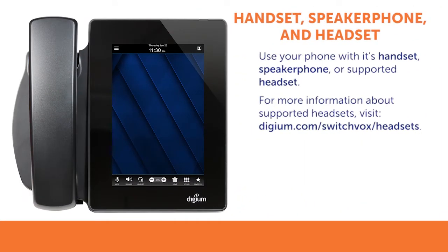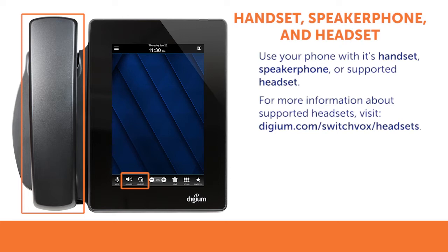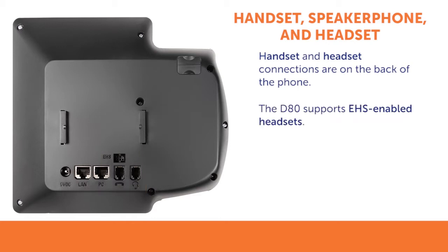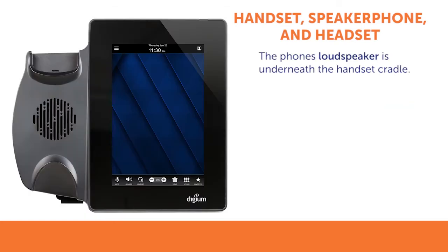Your phone can be used with its handset, the speakerphone, or with a separate headset. The handset and headset connections are located on the back of the phone. There is no need to use a handset lifter, as the D80 supports EHS-enabled headsets for seamless operation.